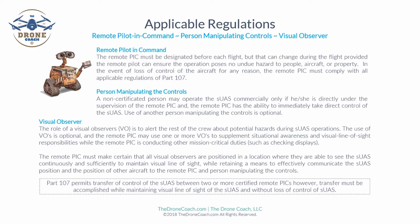Once certified, the range of commercial applications is practically unlimited — from taking photographs for a real estate agent, to inspecting cell towers, or even crop dusting. Part 107 also permits the transfer of control of the SUAS between two or more certified remote pilots in command; however, the transfer must be accomplished while maintaining visual line of sight of the drone and without loss of control.